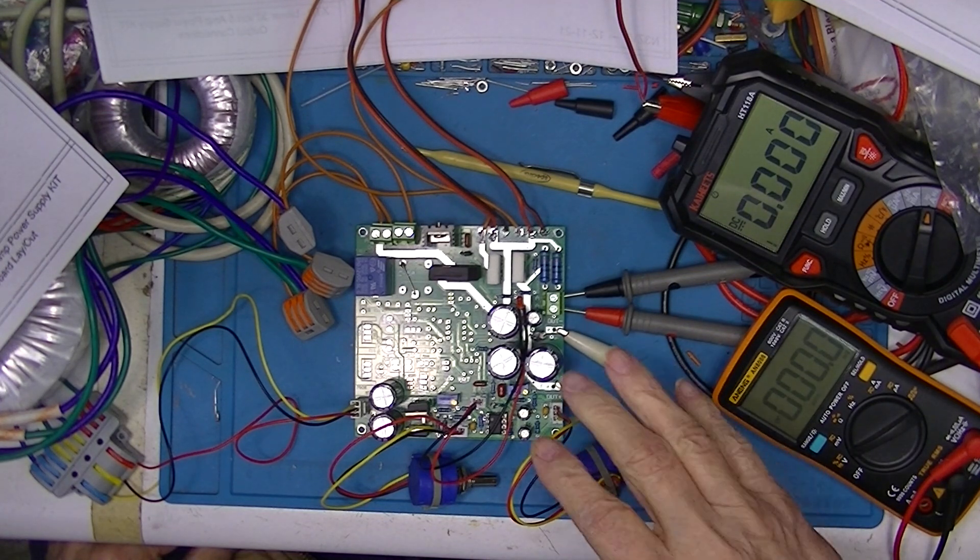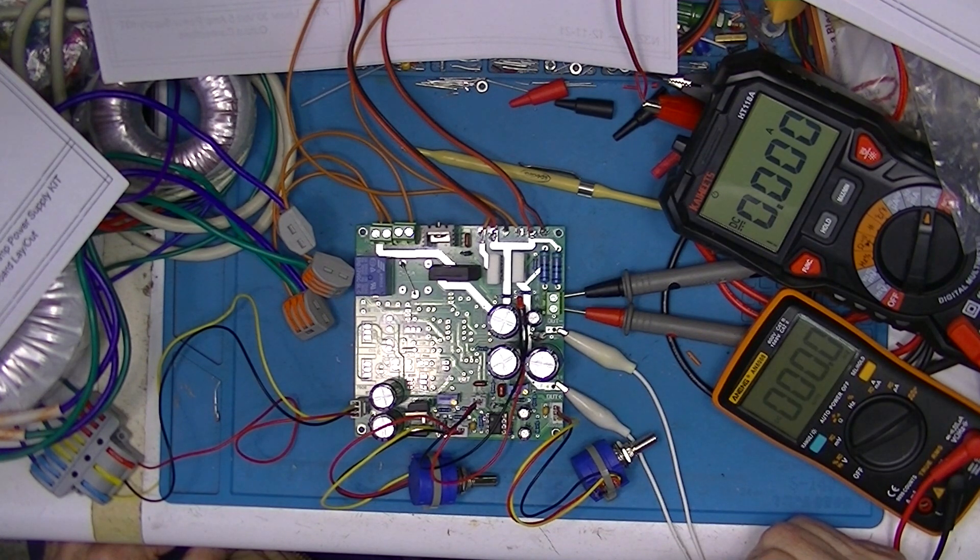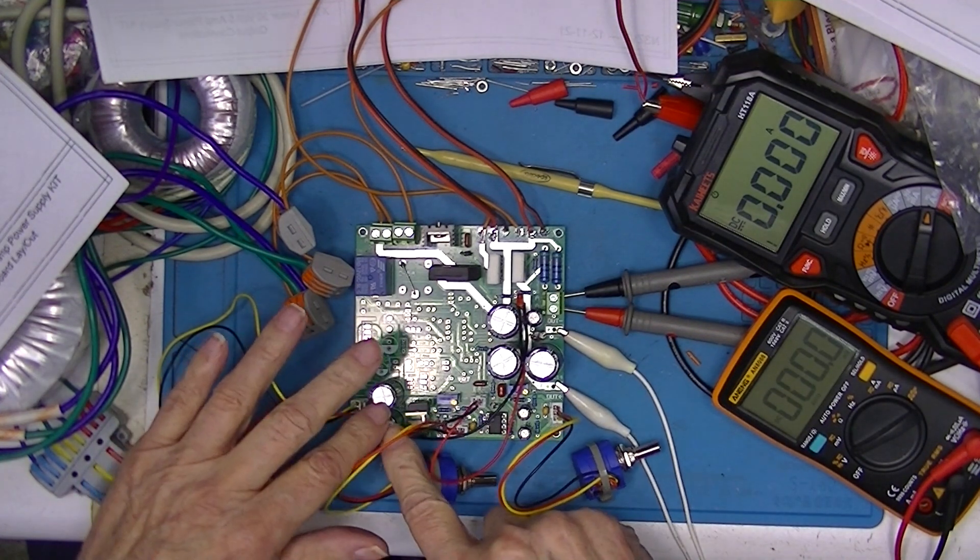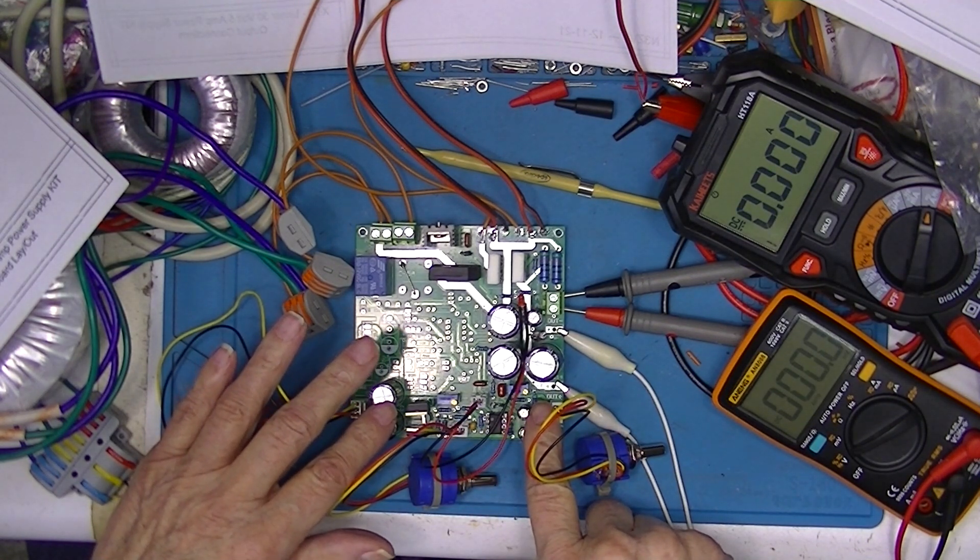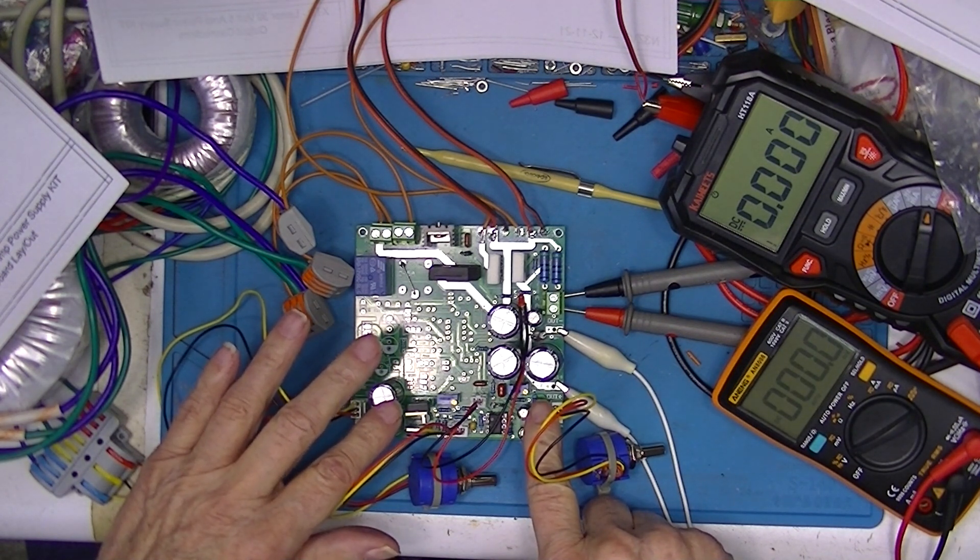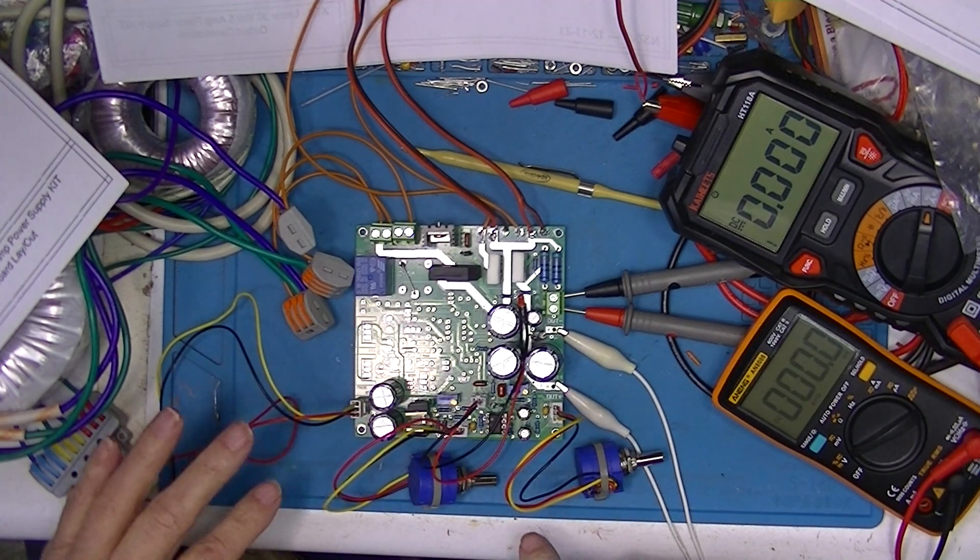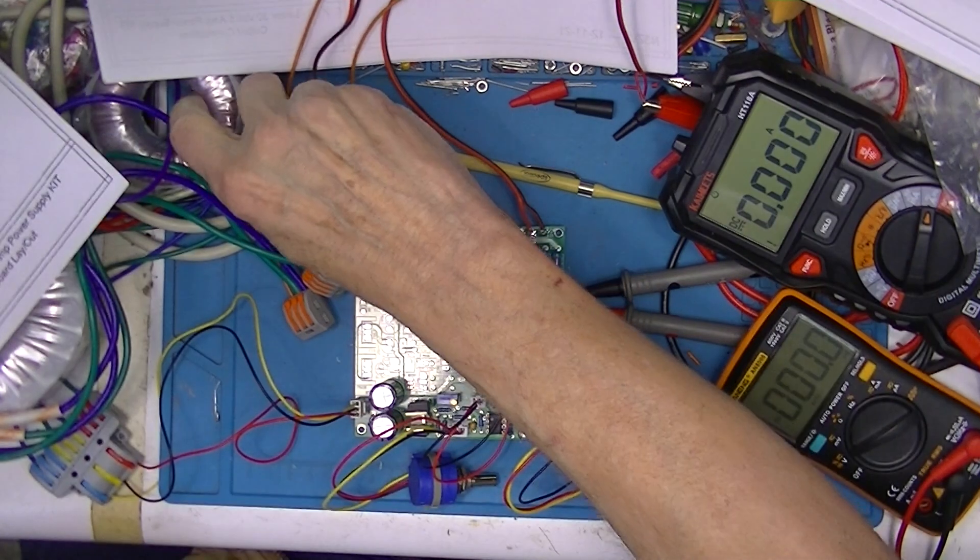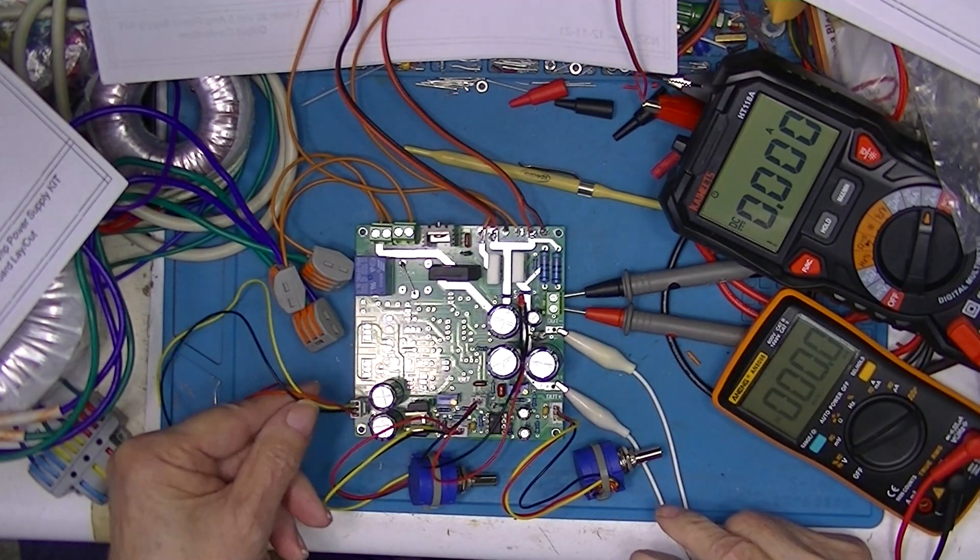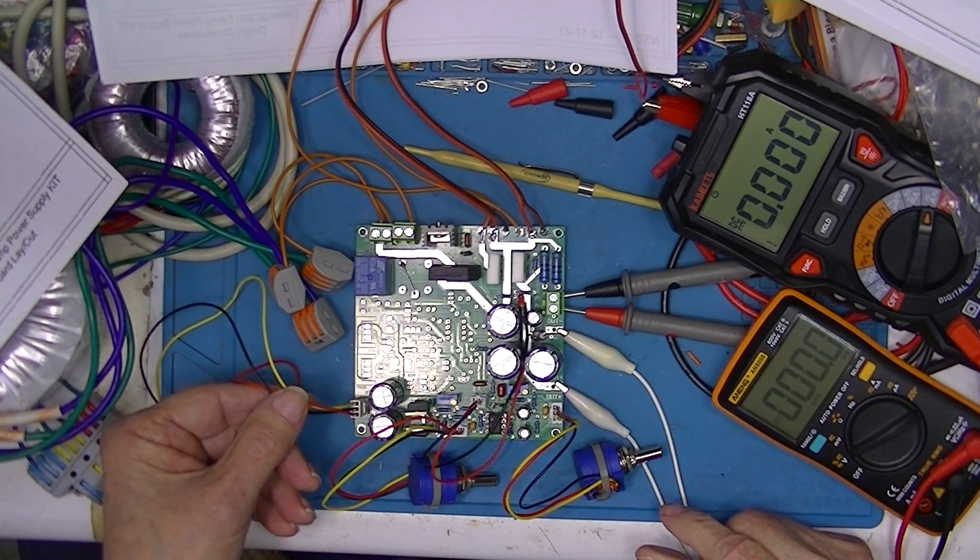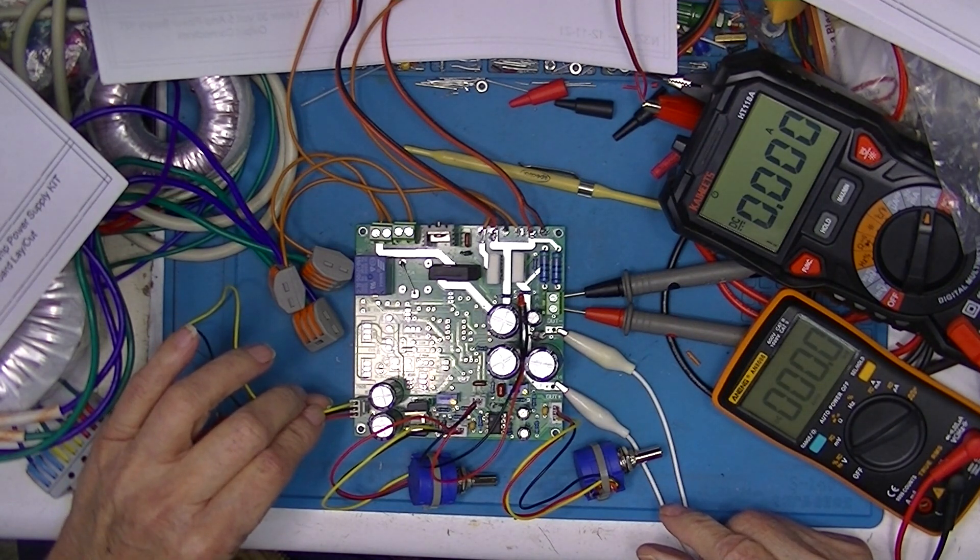This is going to be part two of this 35 volt 5 amp power supply. In part one I completed this section down here which appears on page one of the schematic and I refer to this as the control system. It's being powered right now from this little toroid that's a 15 volt dual secondary or a 15-0-15 or a 30 center tapped.